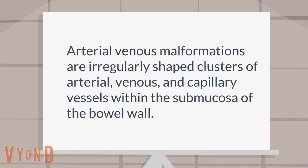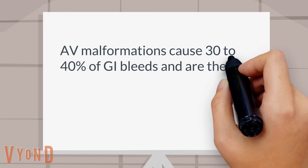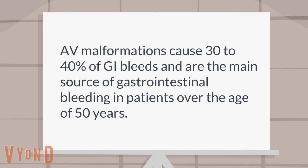AV malformations cause 30 to 40 percent of GI bleeds and are the main source of gastrointestinal bleeding in patients over the age of 50 years.